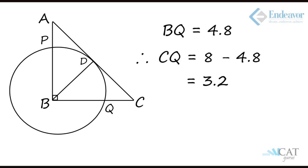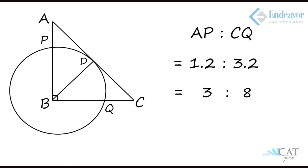Similarly, BQ will also be 4.8 and as BC is 8 units, CQ will be 8 minus 4.8, that is 3.2 units. So the required ratio AP to CQ is 1.2 to 3.2, which can also be expressed as 3 to 8. Hence the required answer is 3 to 8.